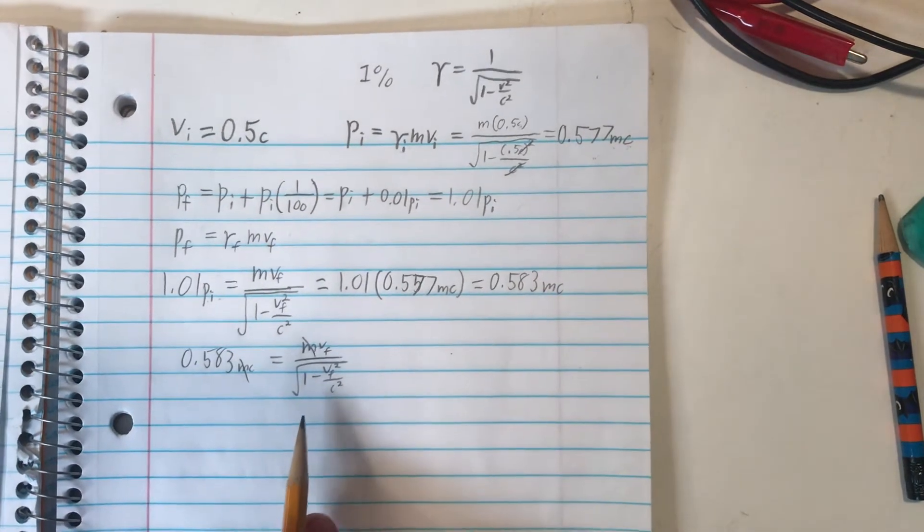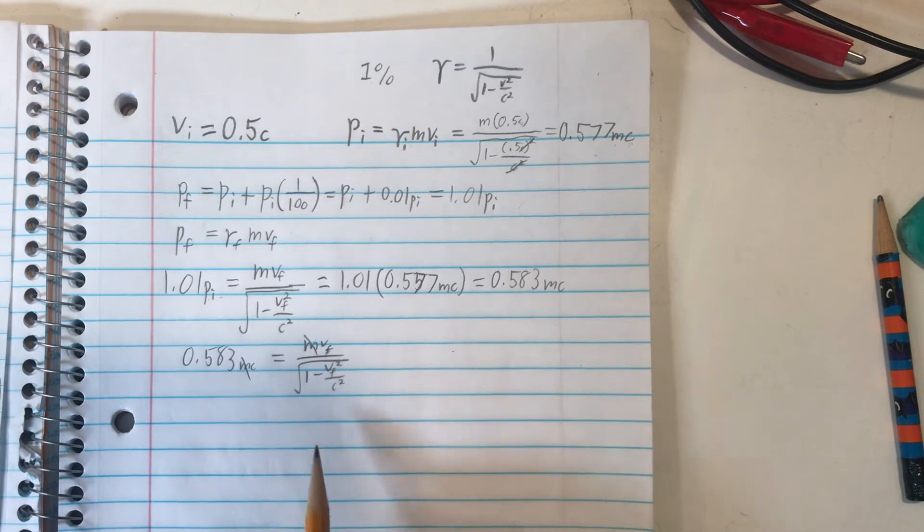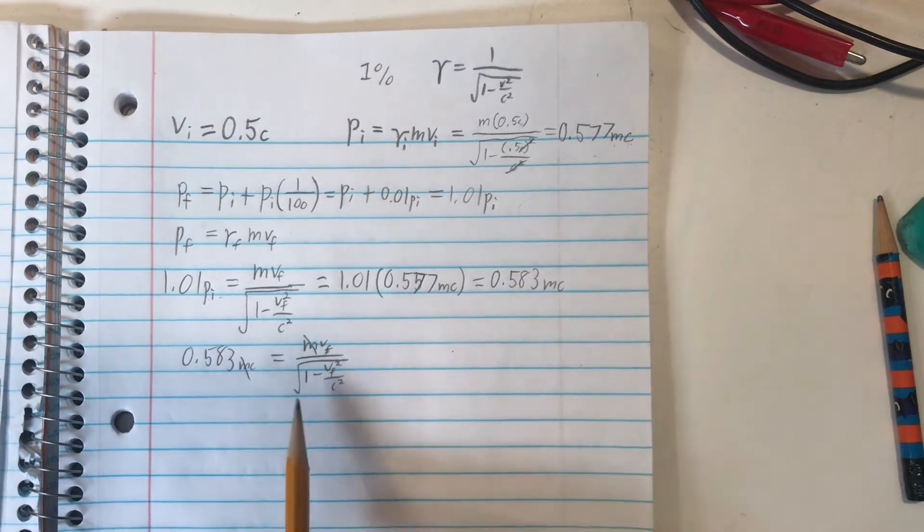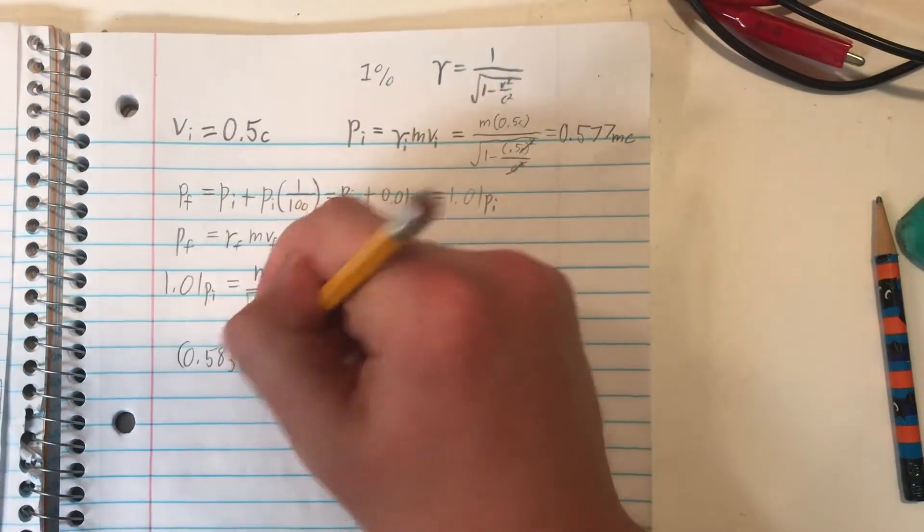We can cancel out the masses, since it's in both formulas here. And now what we want to do is we want to solve for vf, because remember, vf is what we're actually looking for here. So to simplify it, first we can get rid of this pesky square root here by squaring both sides.